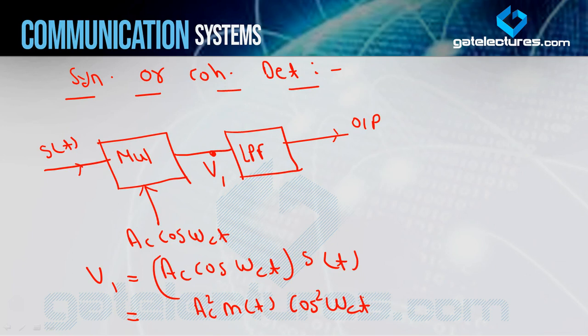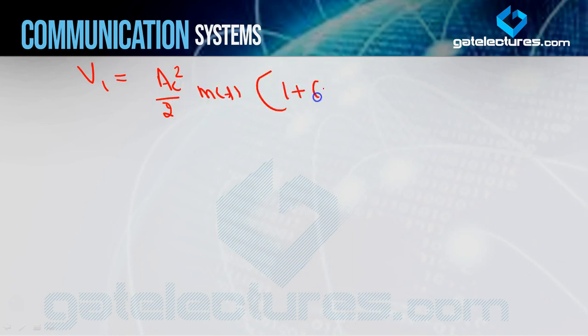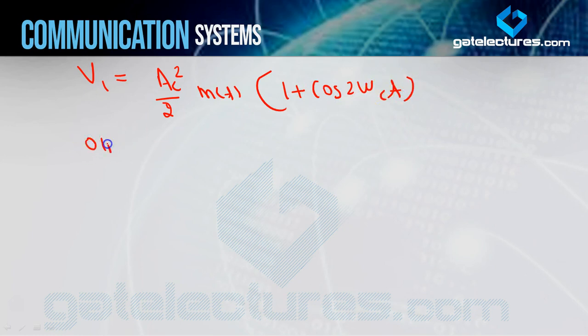Now if I apply the formula for cos²θ, which is (1 + cos2θ)/2, then the value of V1 becomes (AC²/2)·m(t)·(1 + cos2ωCt). The final output will be the output of the low pass filter.